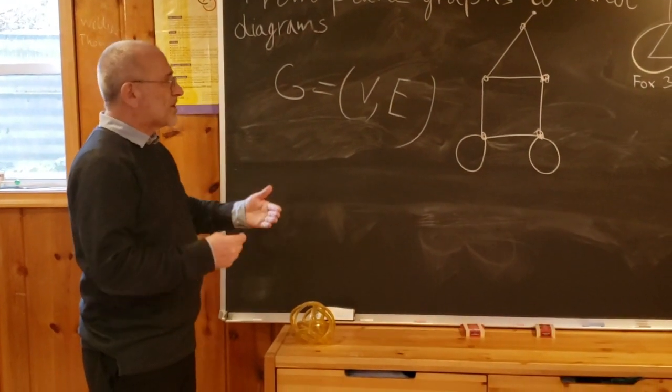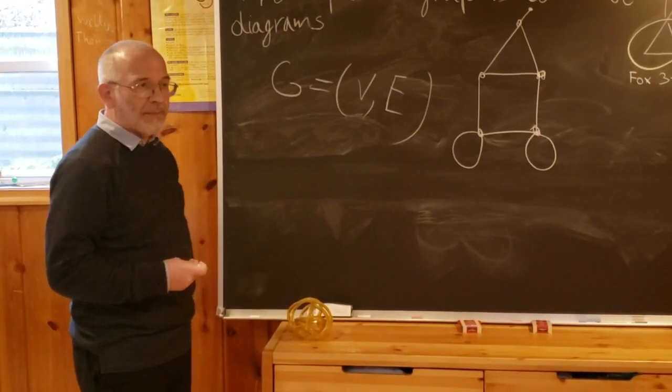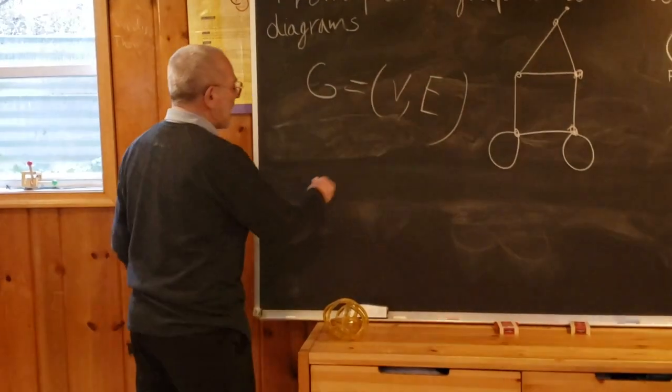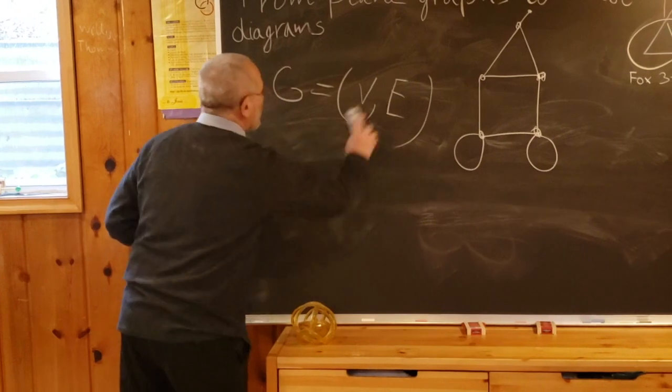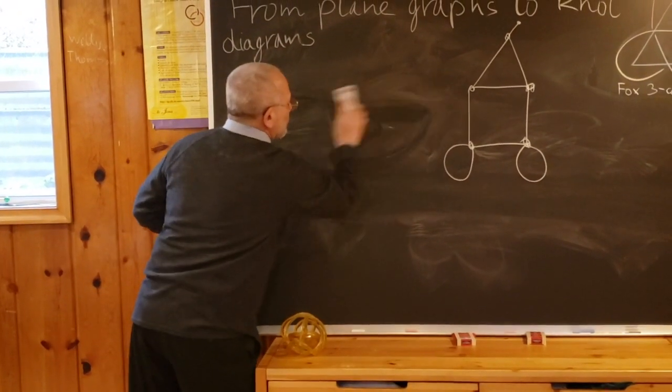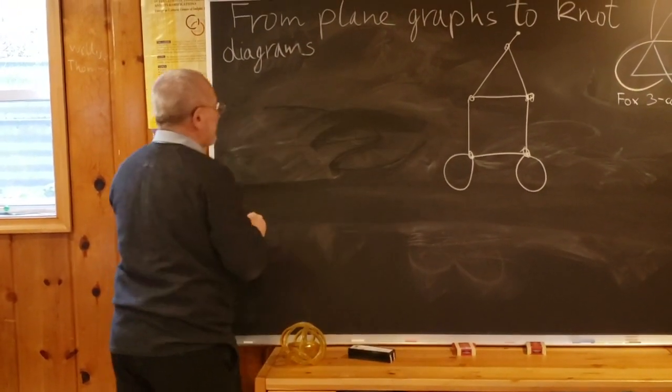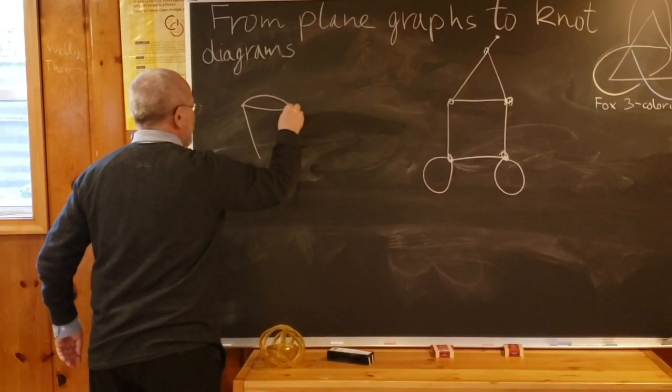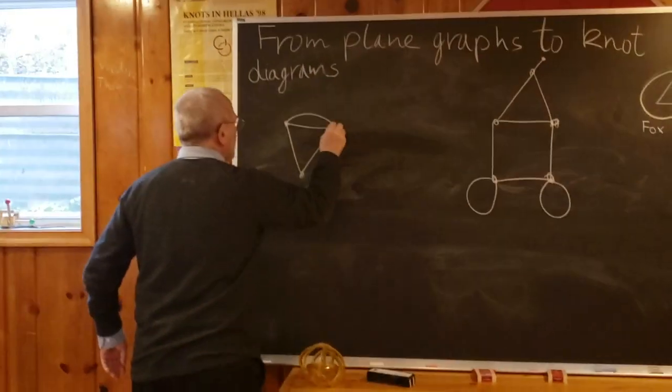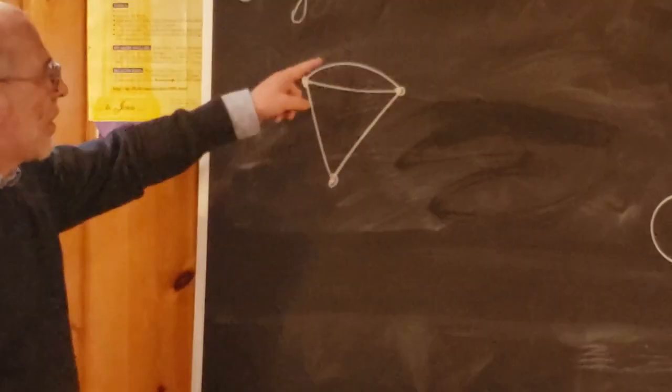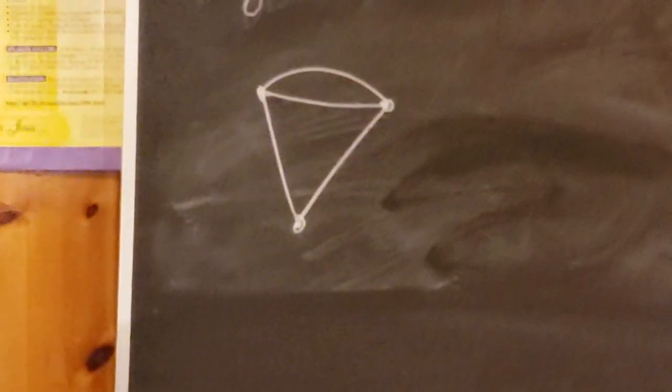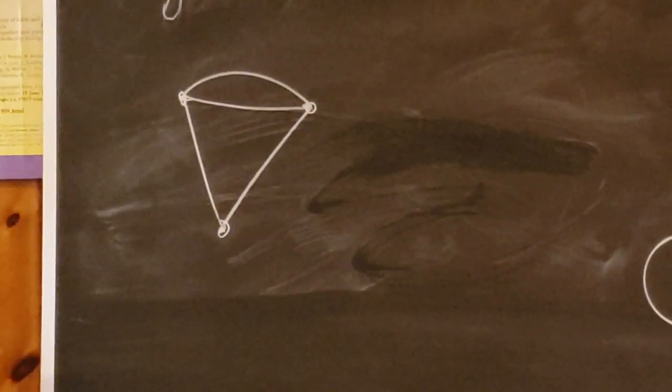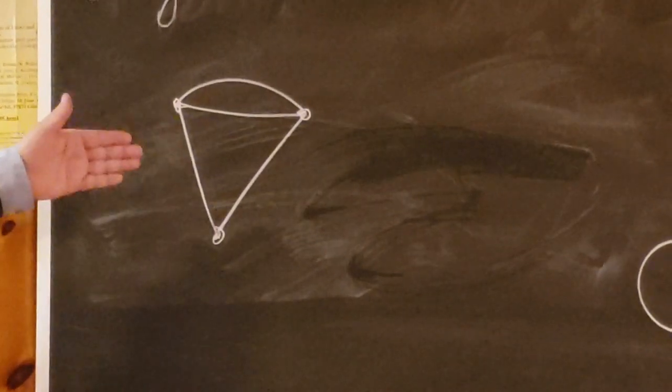Consider such a graph. Then to subgraph we'll associate a diagram. I will show first an example and then explain how we are doing this. Let our graph be something rather simple, let it be something like this. You see, in the graph we allow double edges.